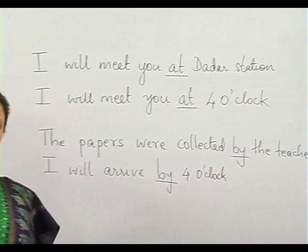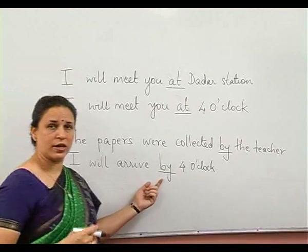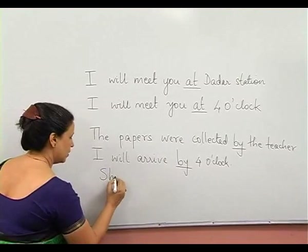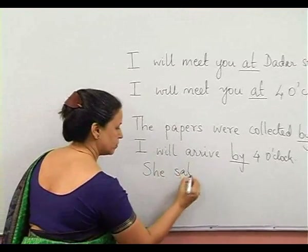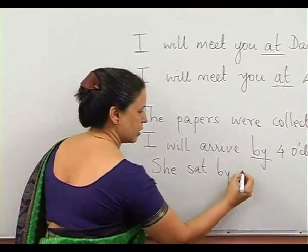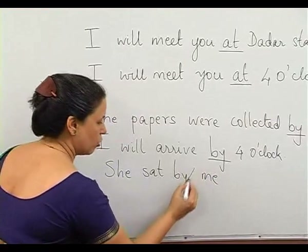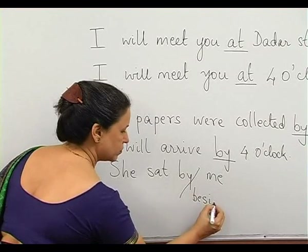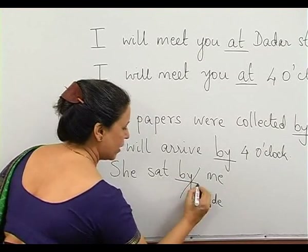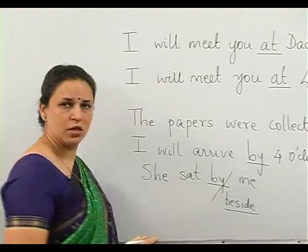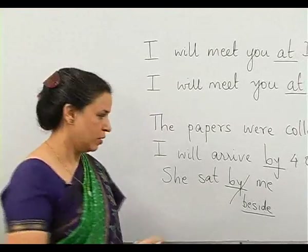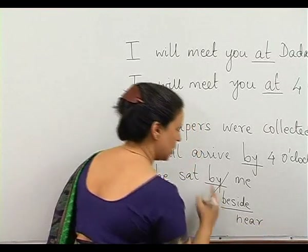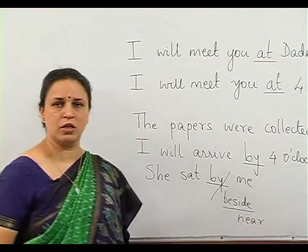Let us take another example for 'by' where again the meaning changes. Here the meaning of 'by' is beside. By or beside means just close to me or near me — it can also mean near. Now all these are prepositions which have similar meaning in this context.